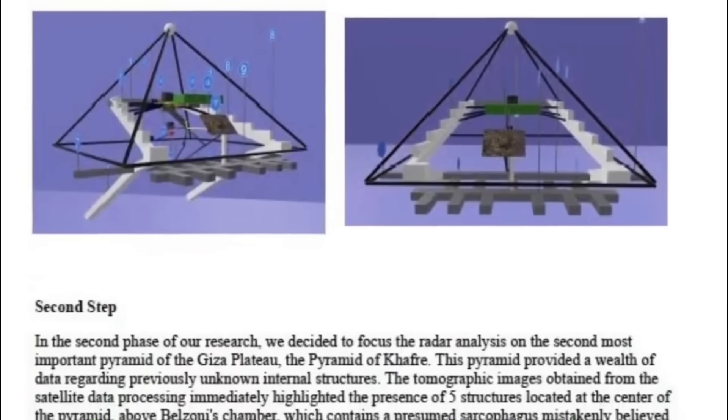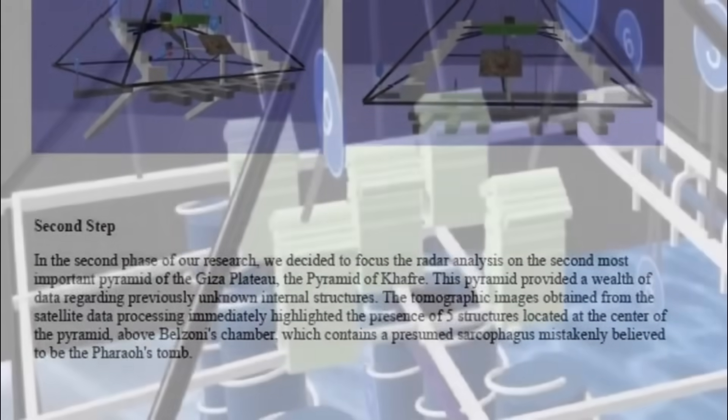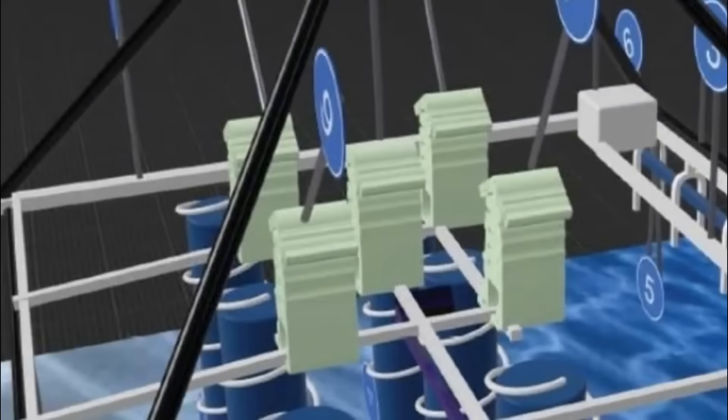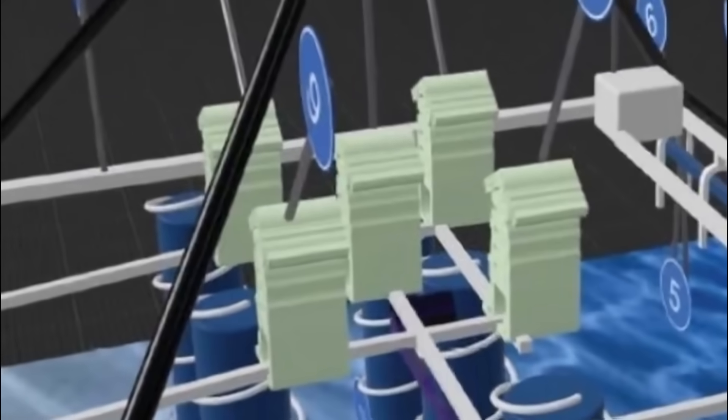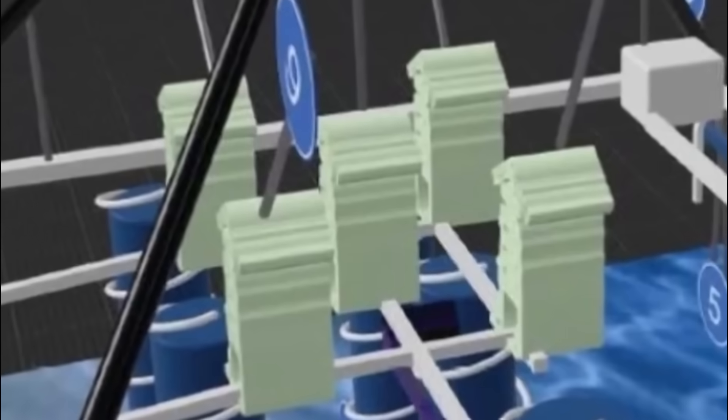So, let's just keep looking at what the new stuff is. The tomographical images obtained from the satellite data processing immediately highlighted the presence of five structures located at the center of the pyramid above Belzoni's chamber, which contained a presumed sarcophagus, mistakenly believed to be the pharaoh's tomb.